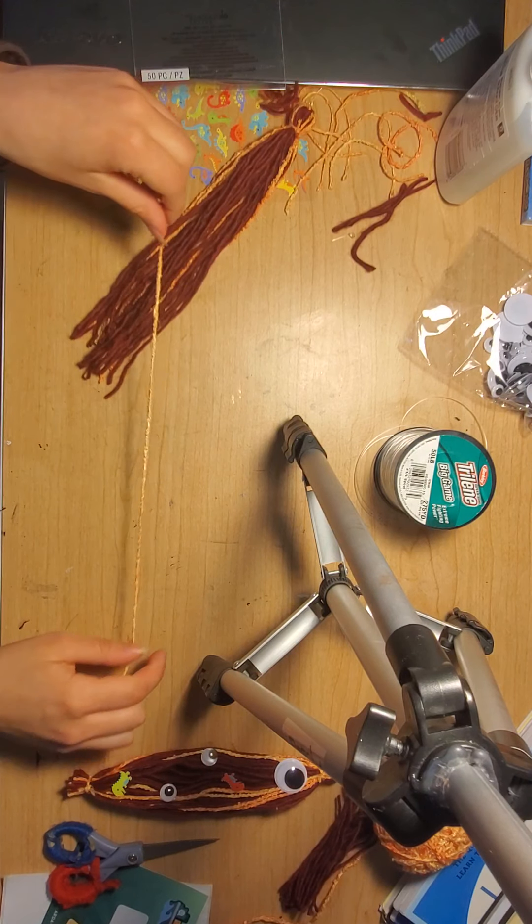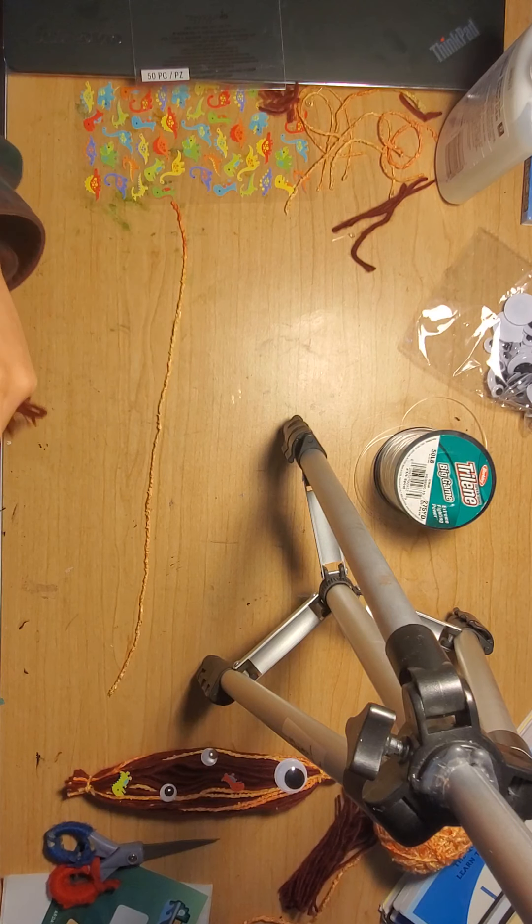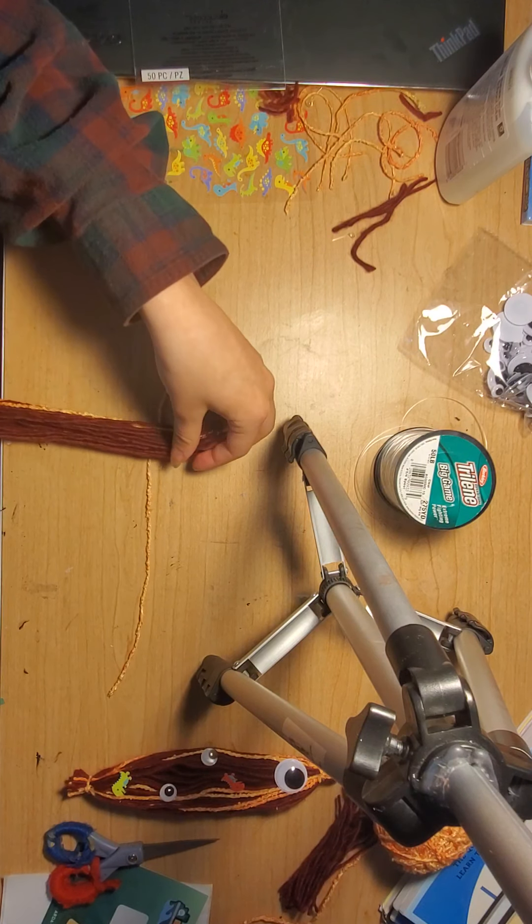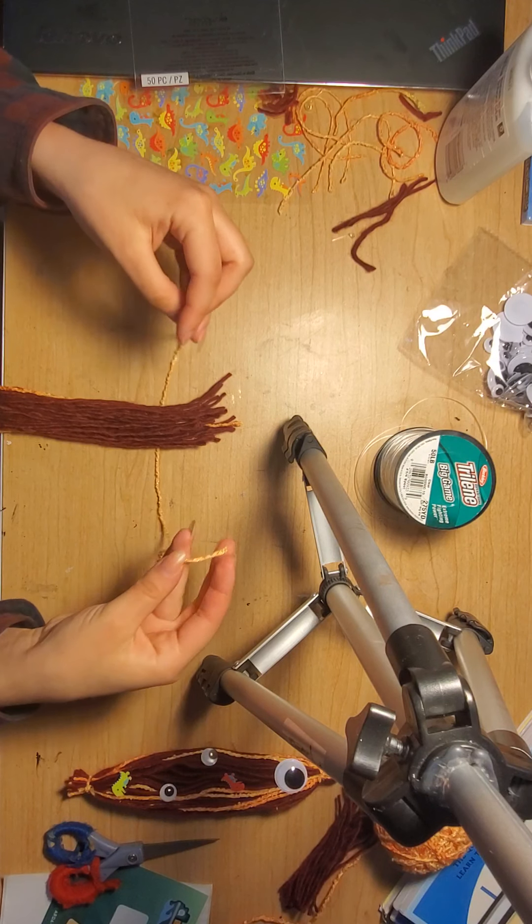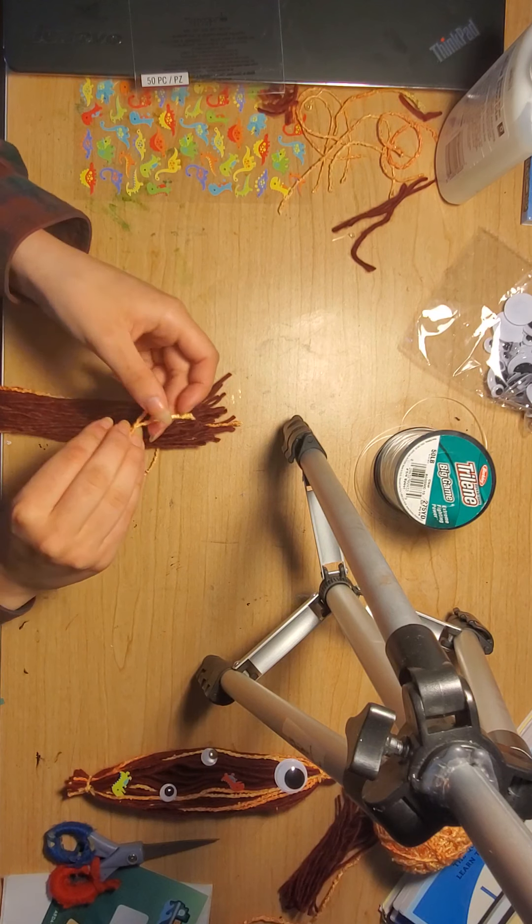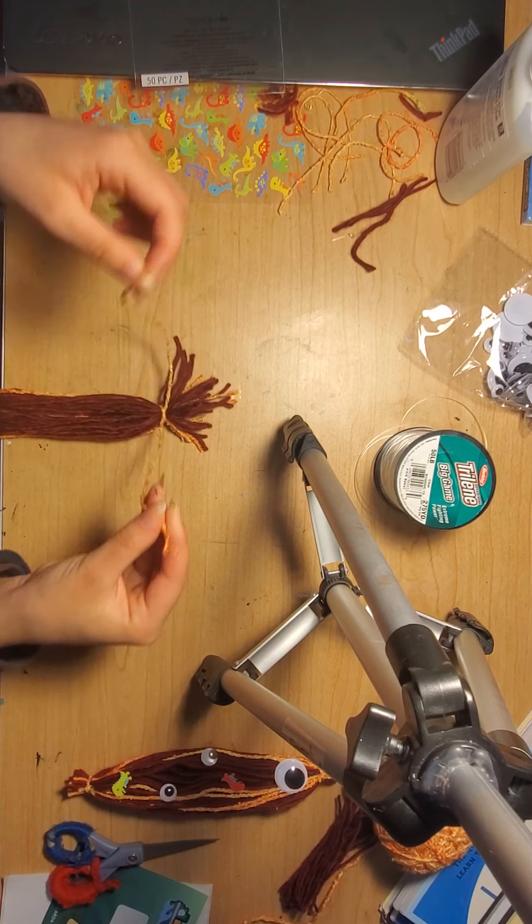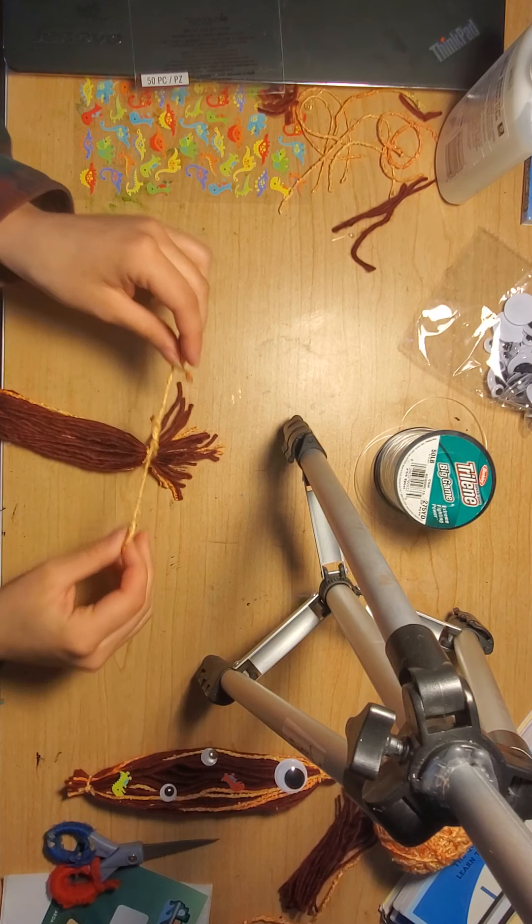And then you're going to set it aside and you can get your other strand. There's a lot of steps. And you're going to lay the back end of your fish worm thing right here. And again you're going to take it, go around, pull. Take it, go around, pull.